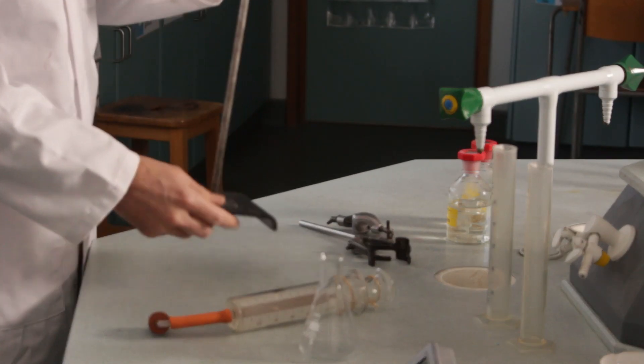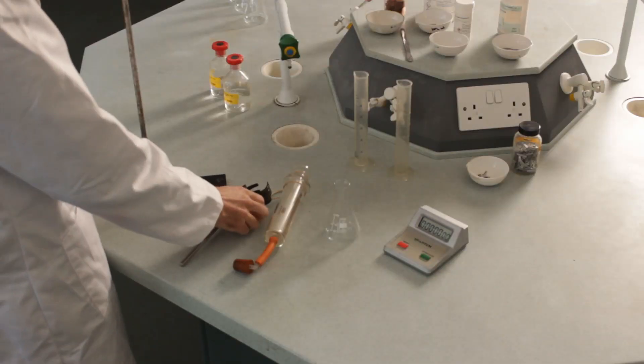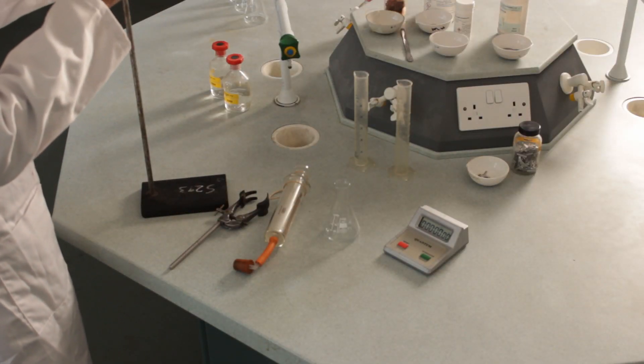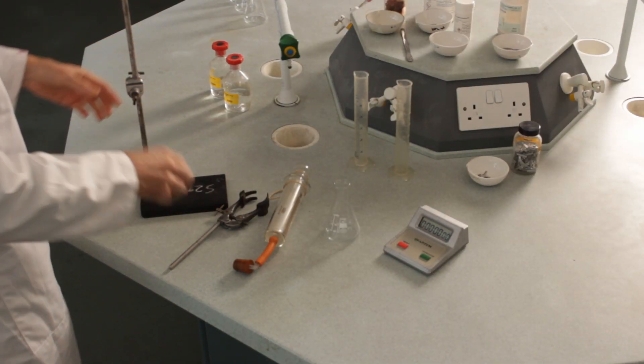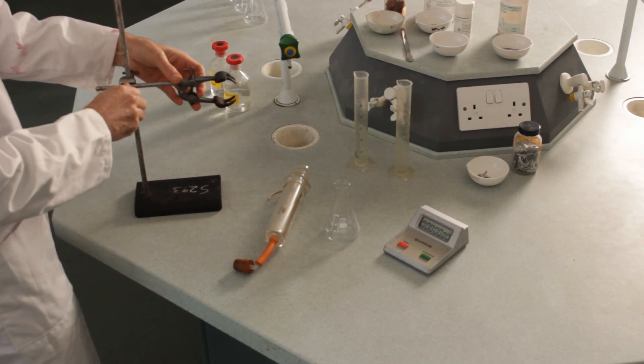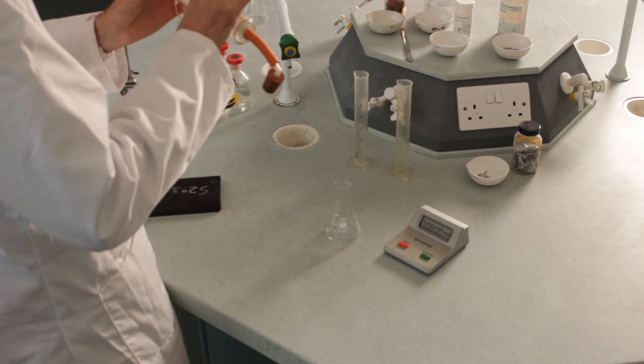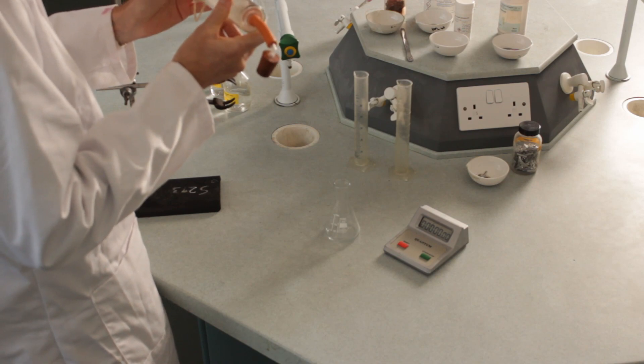This, of course, is a clamp stand and a clamp. And the bit which connects the two together is this, which is called a boss. Slide that on there, put this in here, and then clamp the gas syringe. I don't want to clamp it too tightly, otherwise it won't move. If you squeeze it really hard here, the barrel doesn't move.